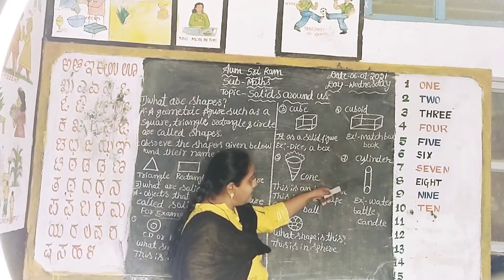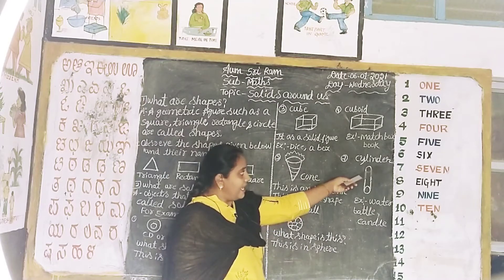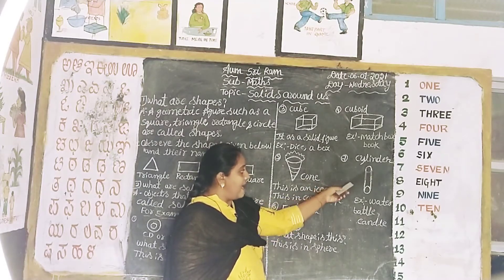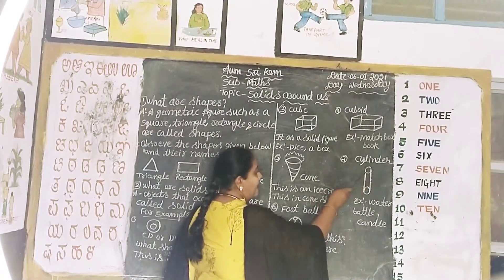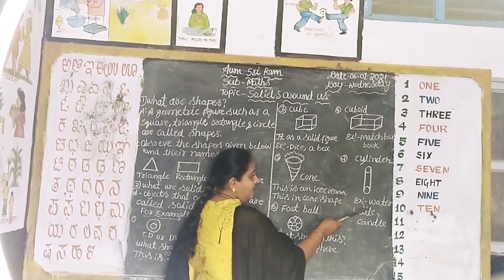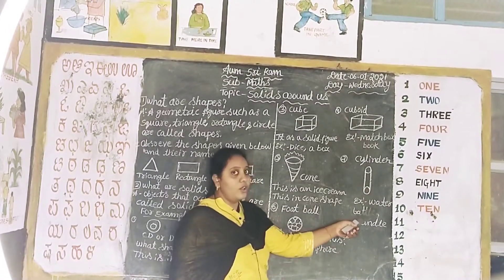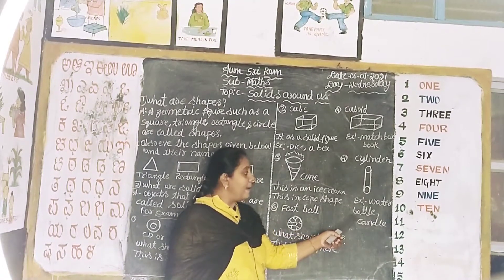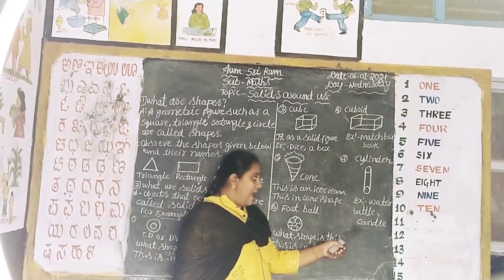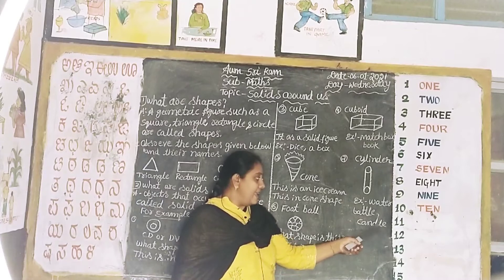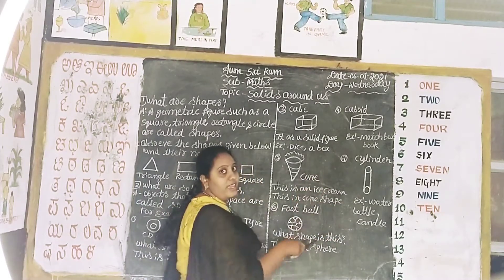Cylinder. C-Y-L-I-N-D-E-R. Cylinder. Example: water bottle, candle. C-A-N-D-L-E. Candle. These are all solid shapes.